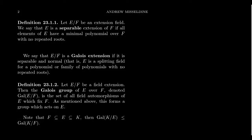Consider the following two or three important definitions. The first is called a separable extension. Imagine we have a field extension, so E is a field extension of F. We say that E is a separable extension of F if all elements of E have a minimal polynomial over F with no repeated roots.